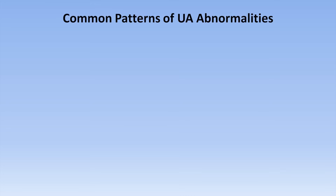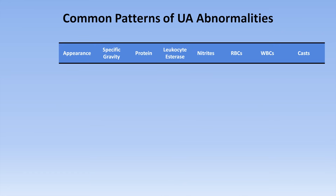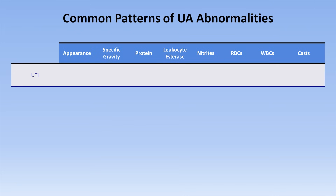I'm going to finish by reviewing five classic patterns of UA abnormalities, looking at gross appearance, specific gravity, protein, leukocyte esterase, nitrites, RBCs, WBCs, and casts. Keep in mind these diseases don't always present with the exact patterns listed, but these are the most typical associations. First, UTIs: the urine is frequently cloudy or turbid, can have any specific gravity, protein may or may not be present, leukocyte esterase is almost always positive, and nitrites may or may not be positive depending on the bacterial species. RBCs may be present, WBCs are almost always present, while casts are usually not seen.